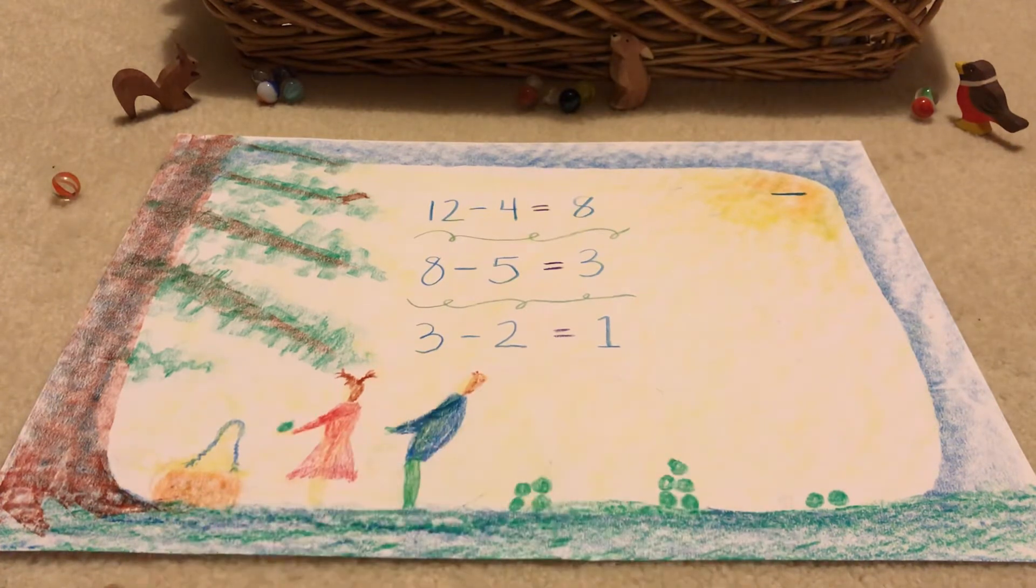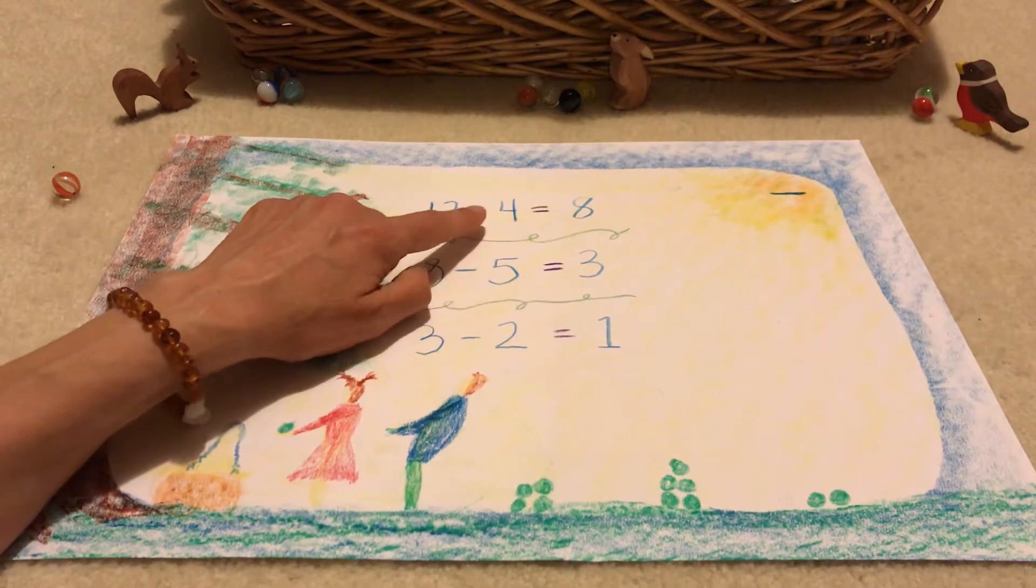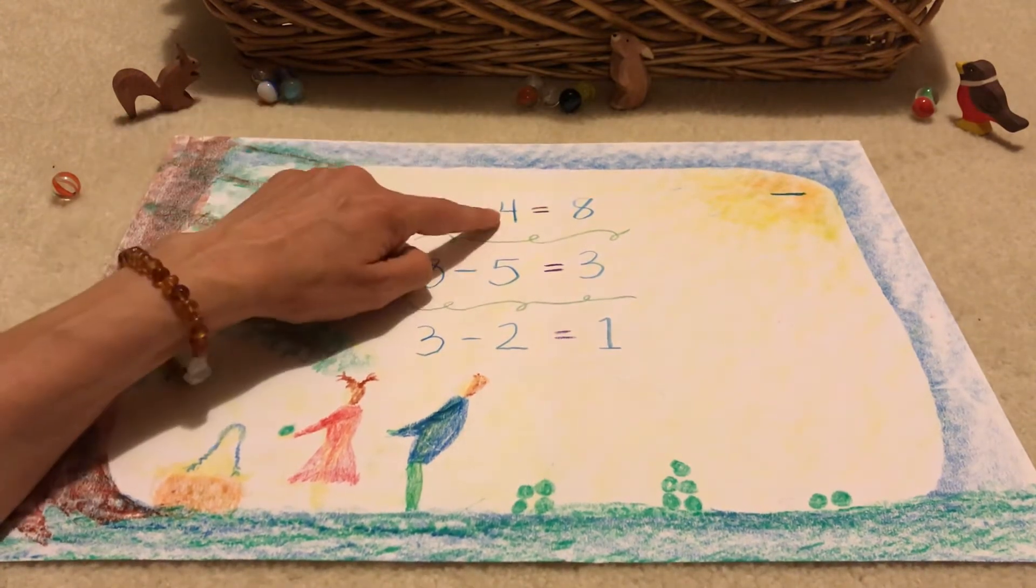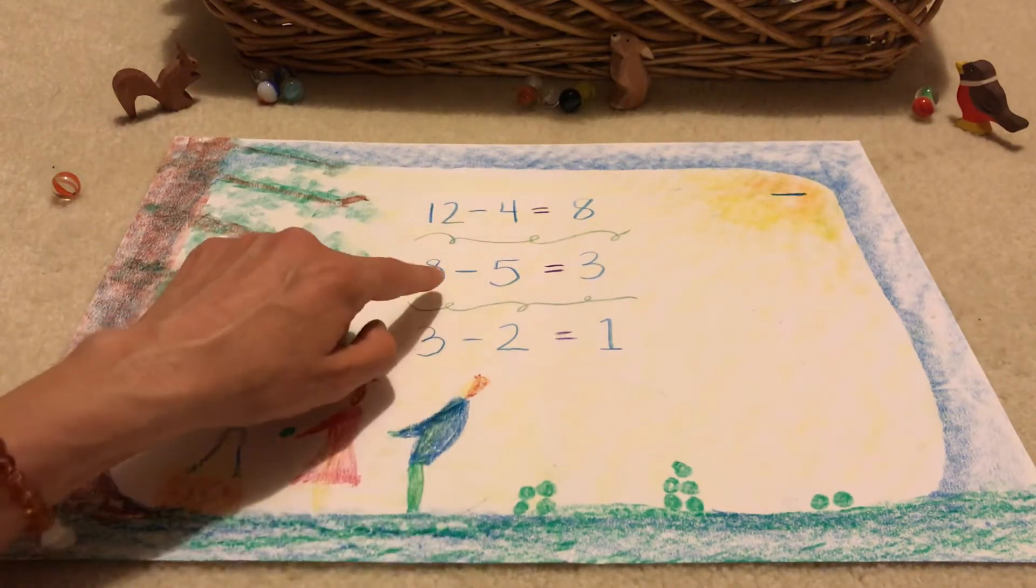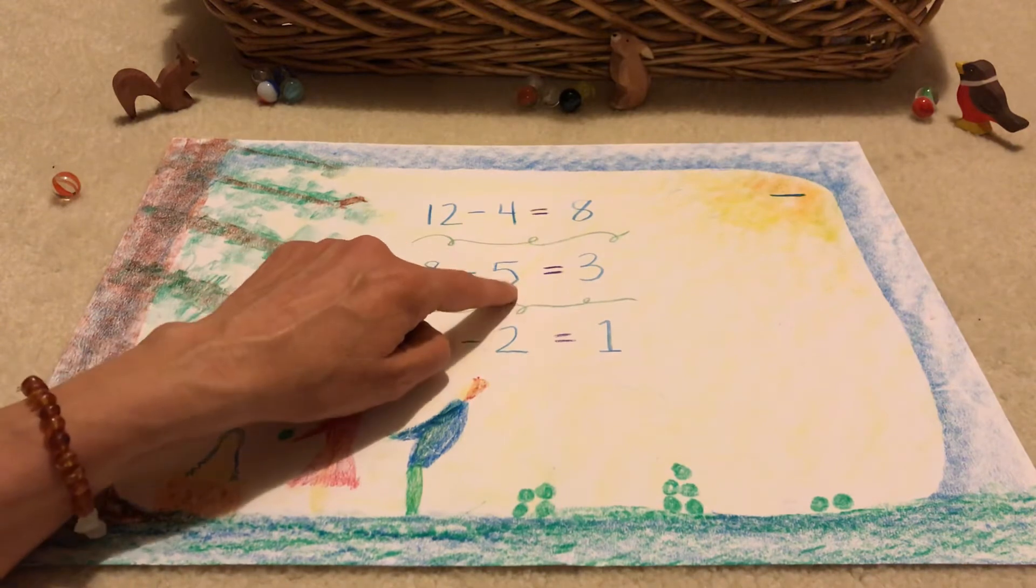So we have twelve minus four fruits for the squirrels equals eight left over. Then we have eight, and we take away minus five fruits for the bunny family, and that equals three.